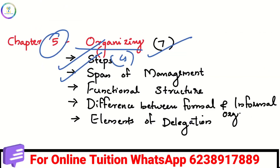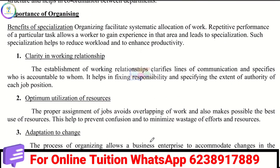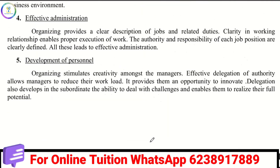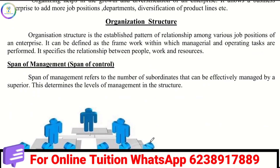The span of management refers to the number of subordinates that can be effectively managed by a superior. One superior can manage many subordinates, and the span of management defines how many.